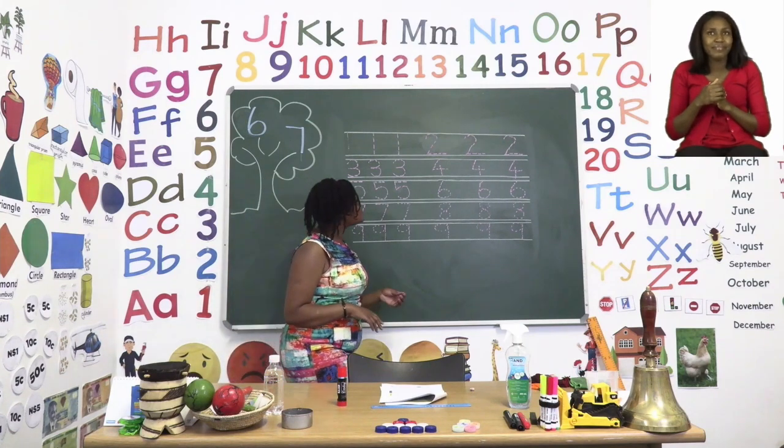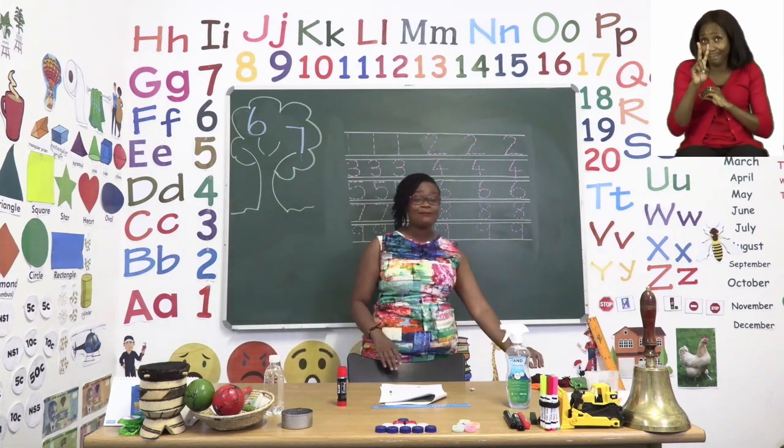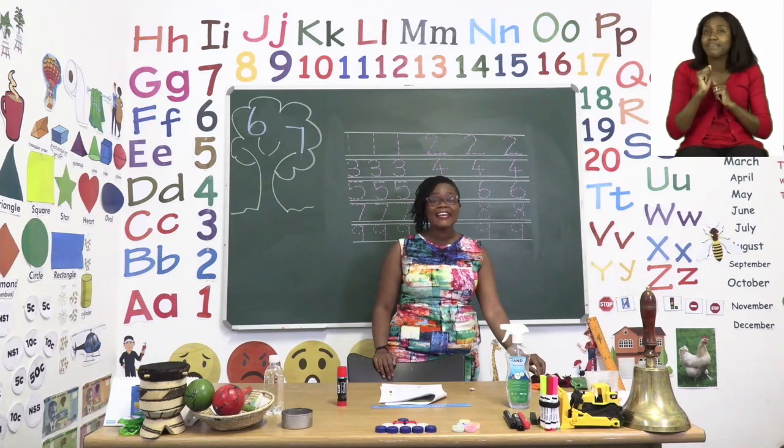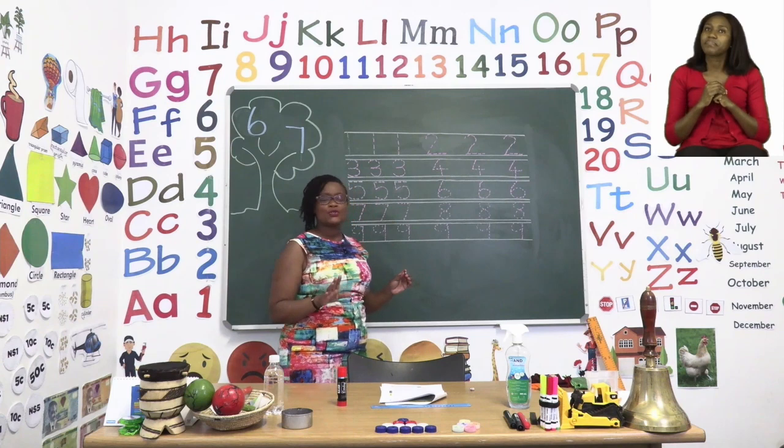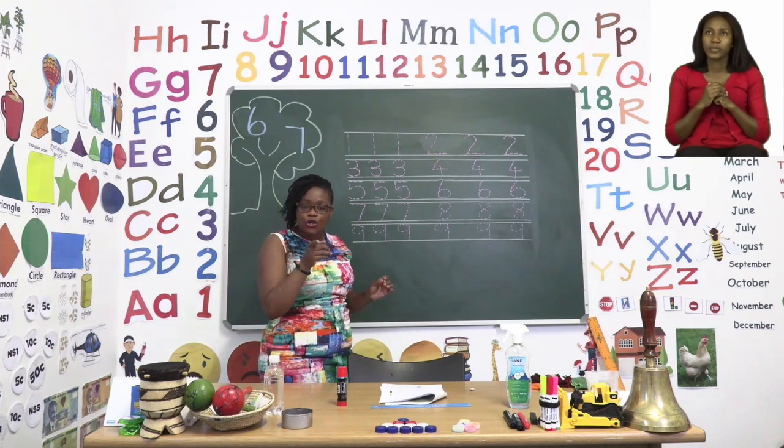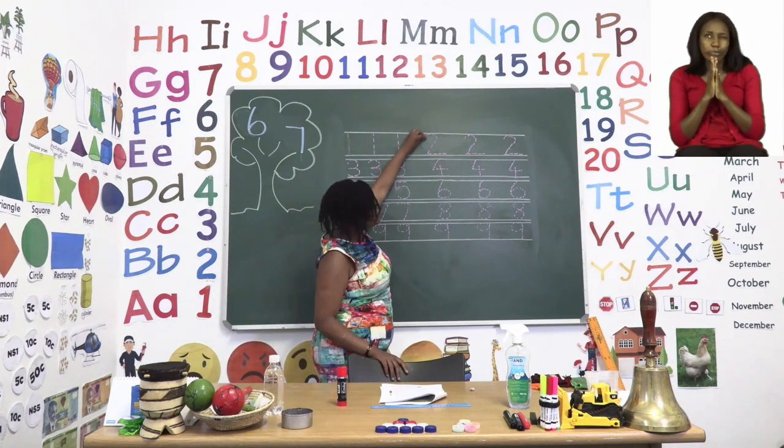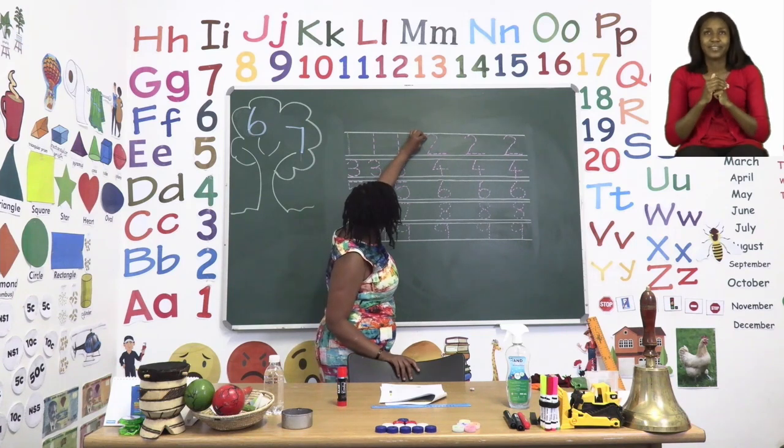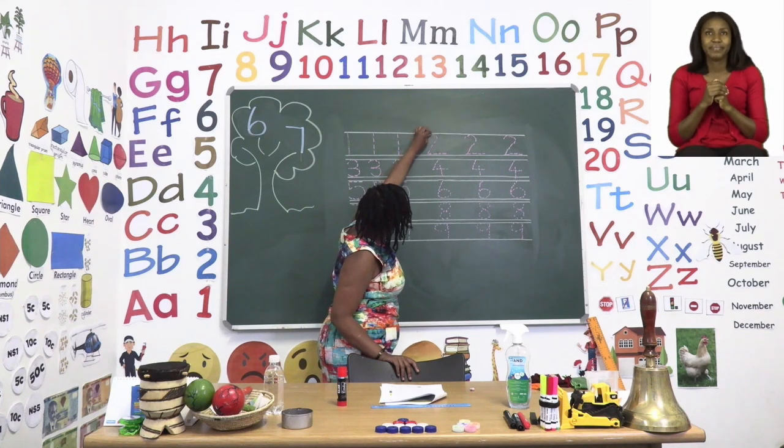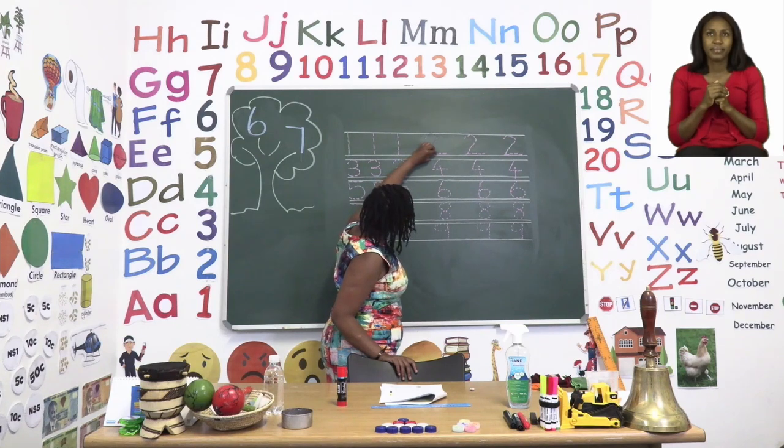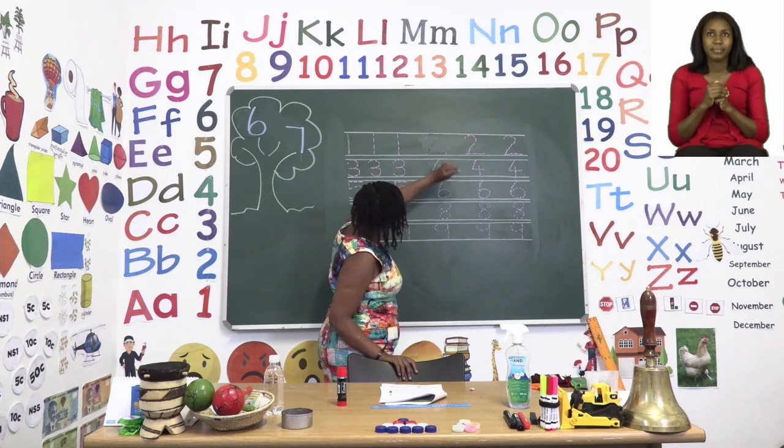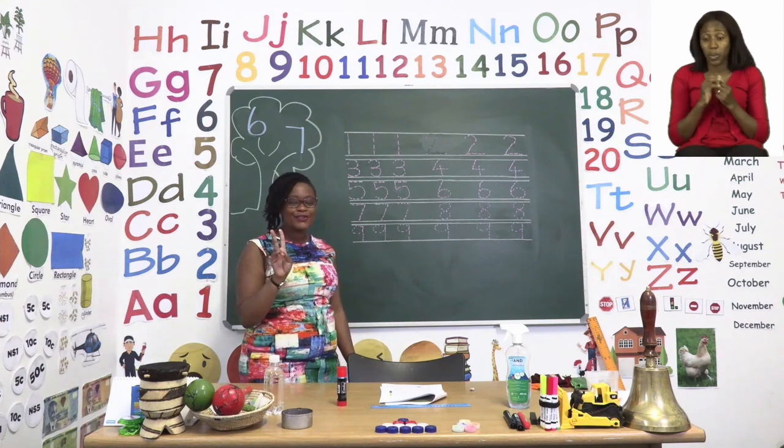The next number that you can see in the same line as number one is number two. Number two starts with a little curve. So we need to also start there, right here. And we go round, touching the top line, down, going across and then a sharp turn to make its legs at the back. That is our number two.